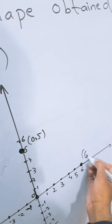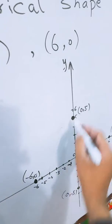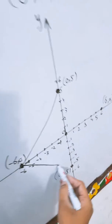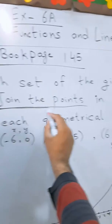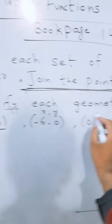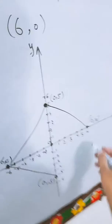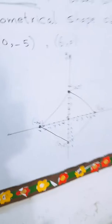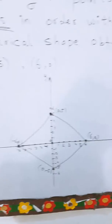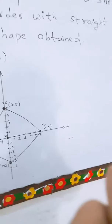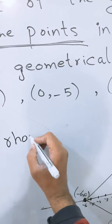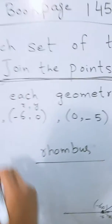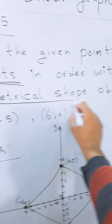Now I shall join these points because the question demands: join the points in order with straight lines and identify each geometrical shape obtained. We have obtained a diamond shape. This shape that looks like a diamond is called a rhombus in geometry. The spelling is R-H-O-M-B-U-S.